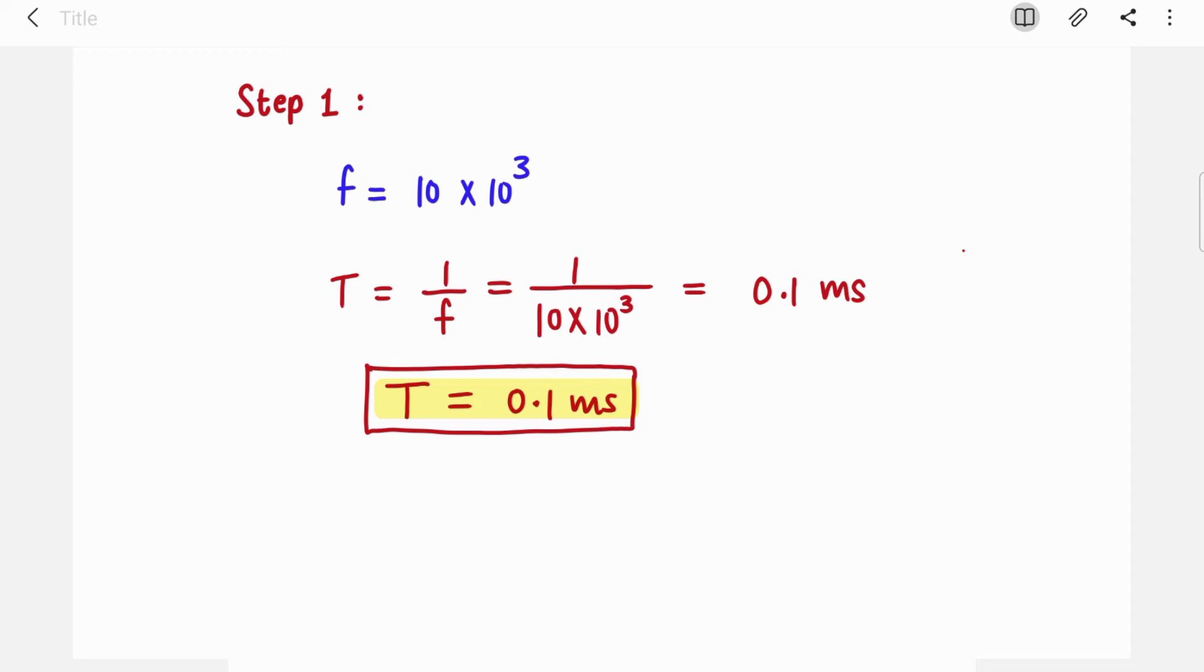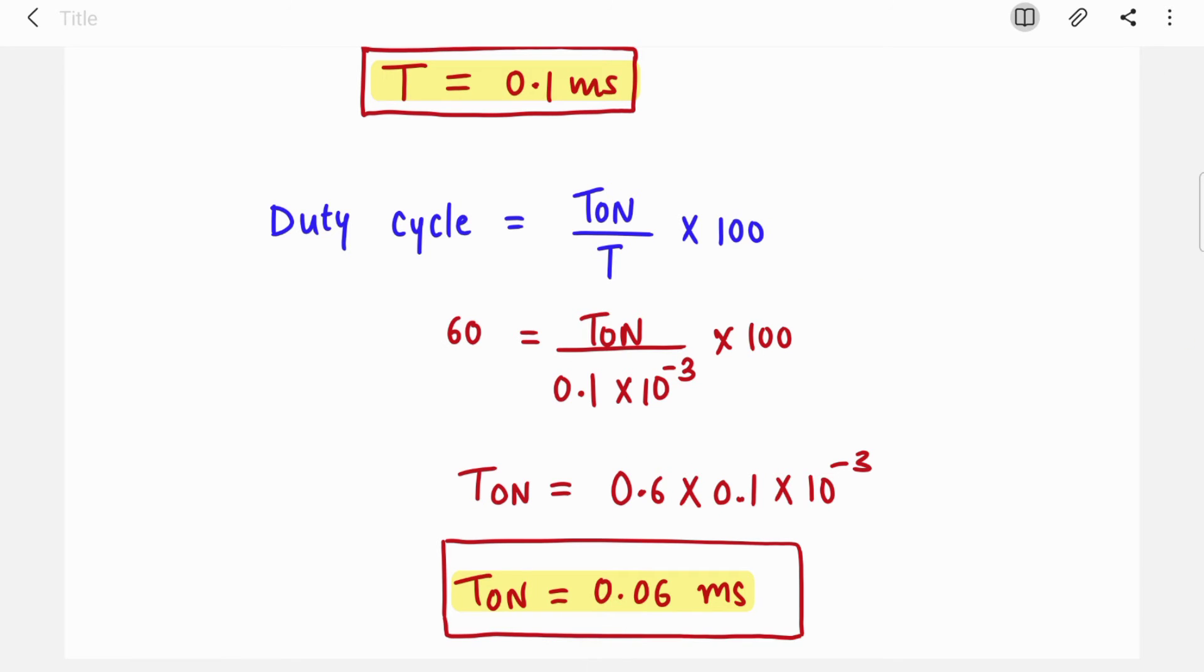We just have to find out what is T_on and T_off. We know that duty cycle is nothing but T_on upon T. We know duty cycle here and time period, so we can find out T_on. Duty cycle is 60, time period is 0.1 millisecond. Just rearrange this equation: 100 will go there and this term will become 0.6 into the time period, so T_on will become 0.06 millisecond.